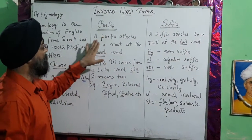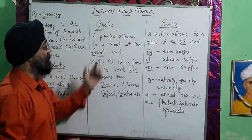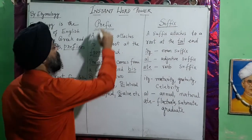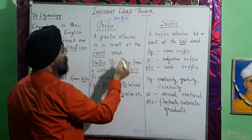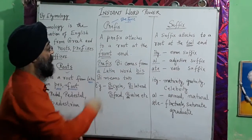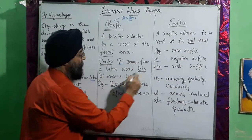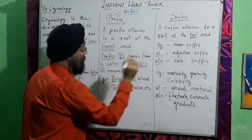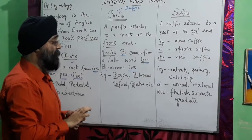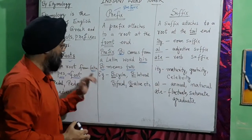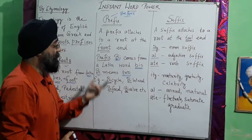Next we have prefix. A prefix attaches to a root at the front end. The word 'prefix' itself comes from 'pre,' which means 'before' — so a prefix is something attached before a root. For example, BI is a prefix that comes from the Latin word 'bias,' meaning 'two.' Using BI, we can make words like bicycle, bilateral, and bifocal.